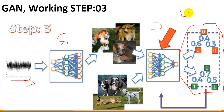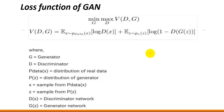We represent the loss function, and we always want to minimize our loss function. This complete loss function represents our GAN network. In this formula, the working of the complete GAN — we represent the min of G and max of D. This means the generator needs to minimize the whole process, while the discriminator needs to maximize the whole process.